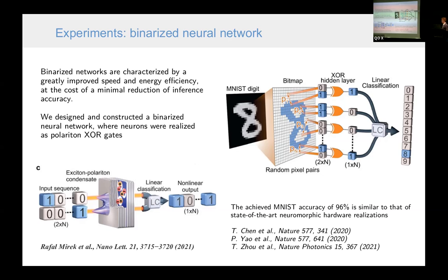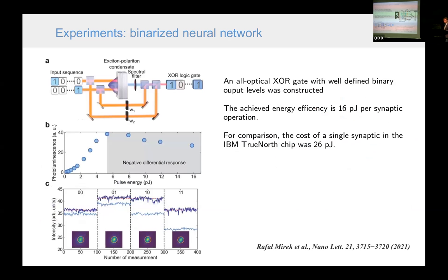And we achieved accuracy of 96%, which is similar to other state-of-the-art neuromorphic hardware realizations. Moreover, we constructed an all-optical exclusive or gate using additionally some optical paths and weights, which were added to the system. And in this case, we observed that the energy efficiency was 16 picojoules per synaptic operation. And this is quite a good efficiency, because for comparison, this IBM TrueNorth chip efficiency was about 26 picojoules per synaptic operation.